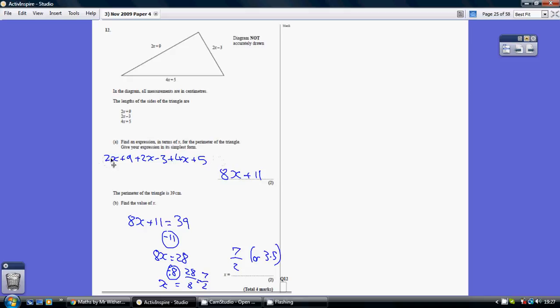So gather up your x's. Well we've got 2 here, 2 here, and 4 here. So that's 8x. Gather up your normal numbers. Be careful, that's taking away 3. So 9 take away 3 is 6. 6 and 5 is 11.